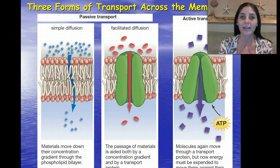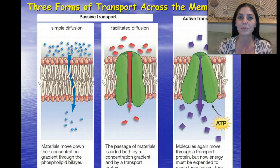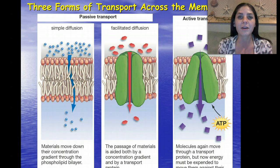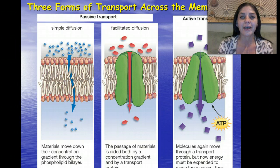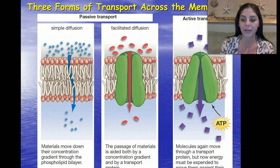Active uses energy in the form of ATP. You should remember that from our Energy Enzymes and Metabolism lecture. We get energy from ATP by breaking that last phosphate bond, and that releases a lot of energy. In active transport, we are going from a lower concentration to a higher concentration — against the concentration gradient.